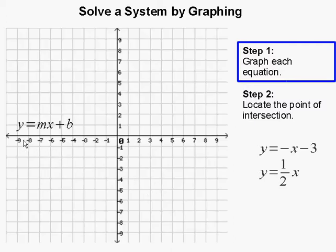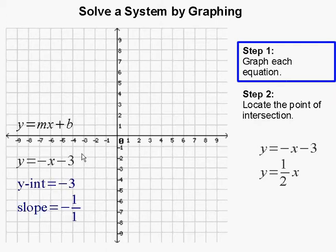We are going to use the slope-intercept formula to graph our equations. We'll start by graphing y equals negative x minus 3. First, we identify our y-intercept, which is b, and that is negative 3.